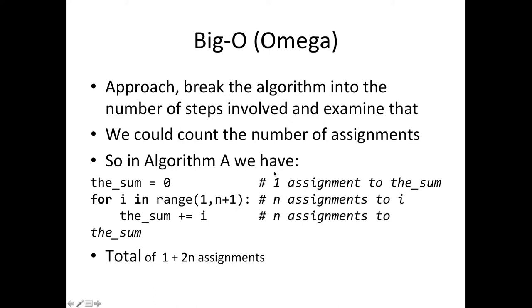So we're going to count. I have a little notes here for assignment. If we set zero to sum we have one assignment. For this for loop we have to assign a number to i every time through the loop and that loop is going to go all the way from one to n. So we have n assignments to i.